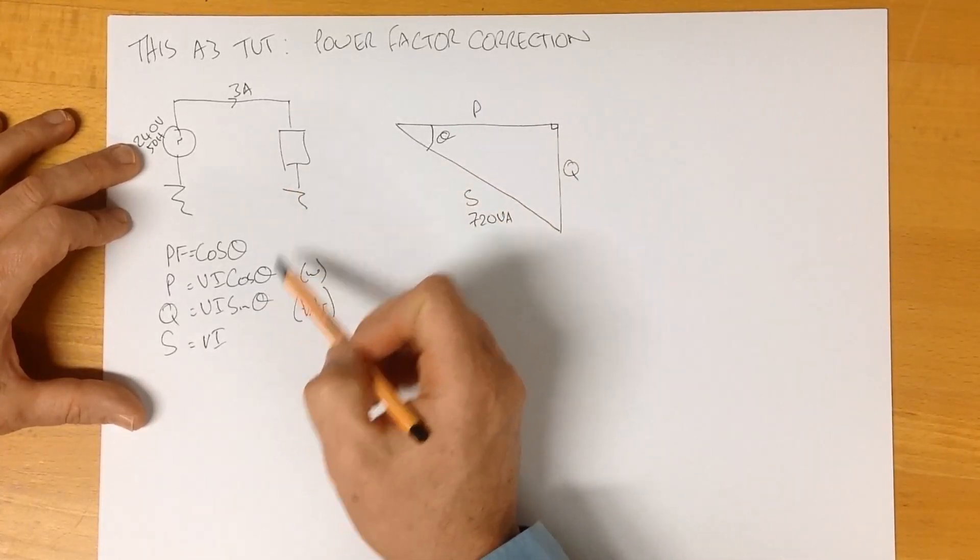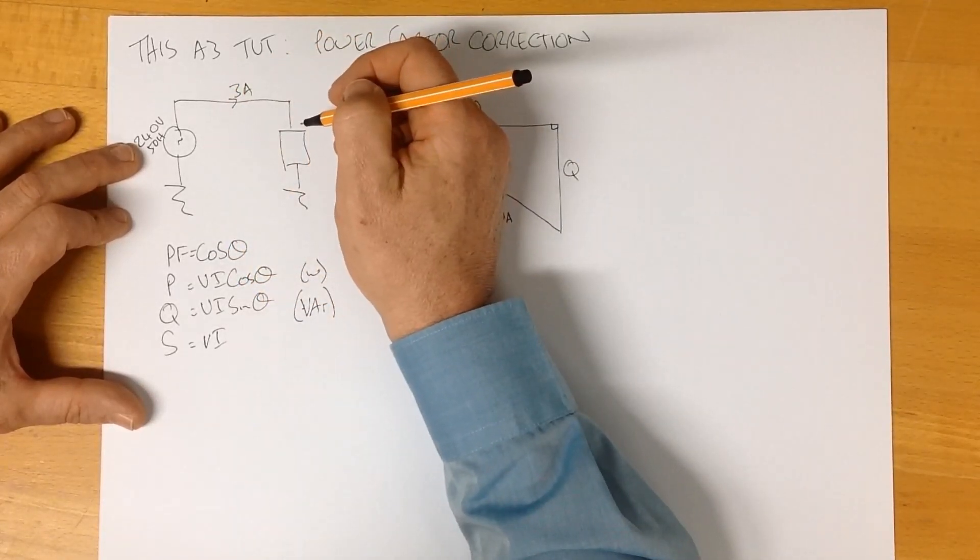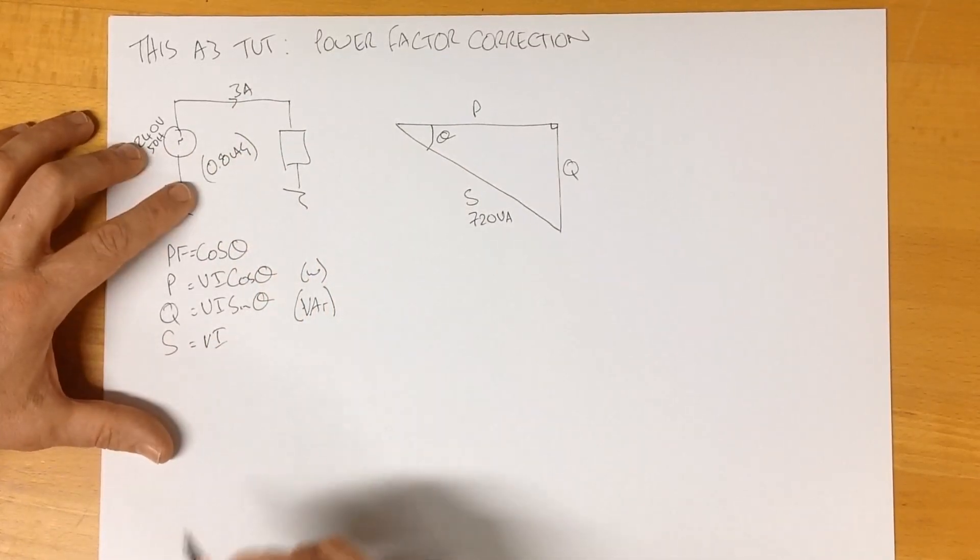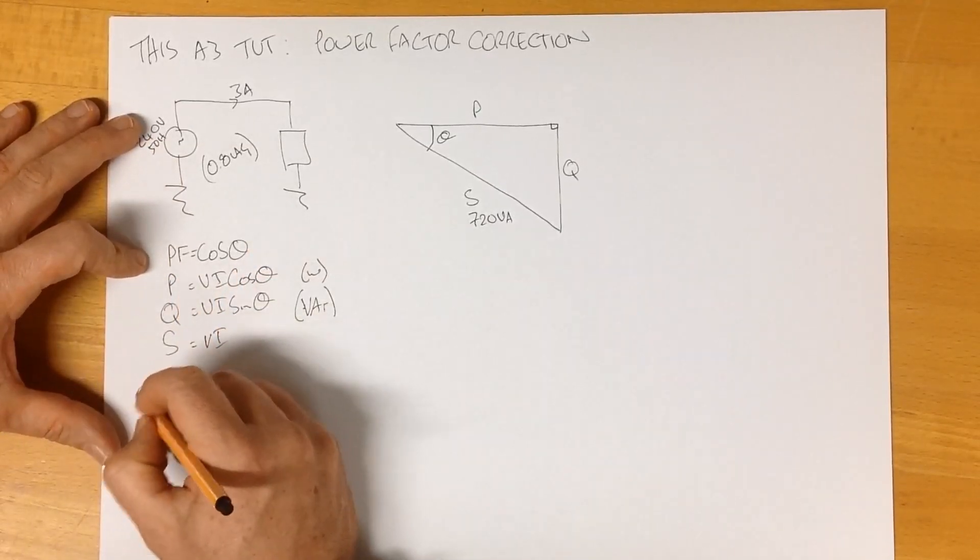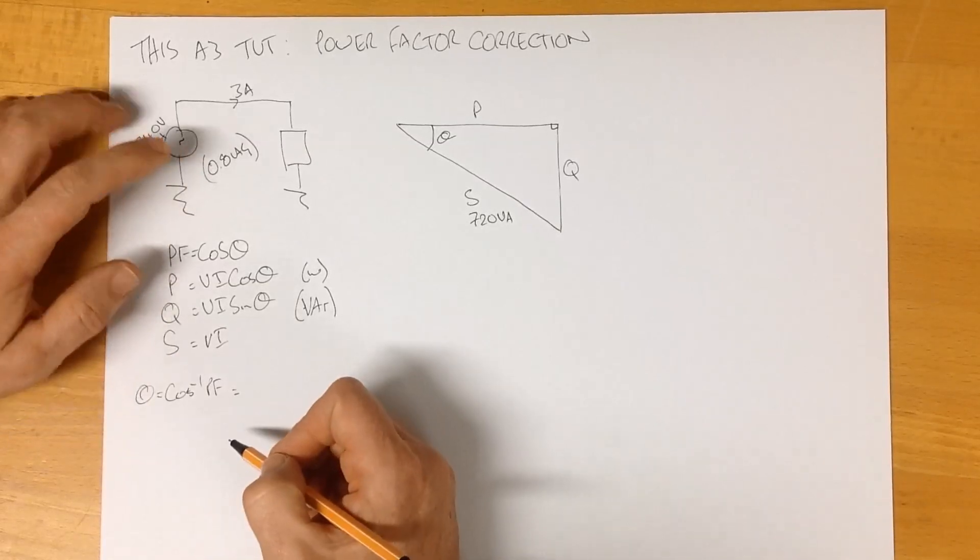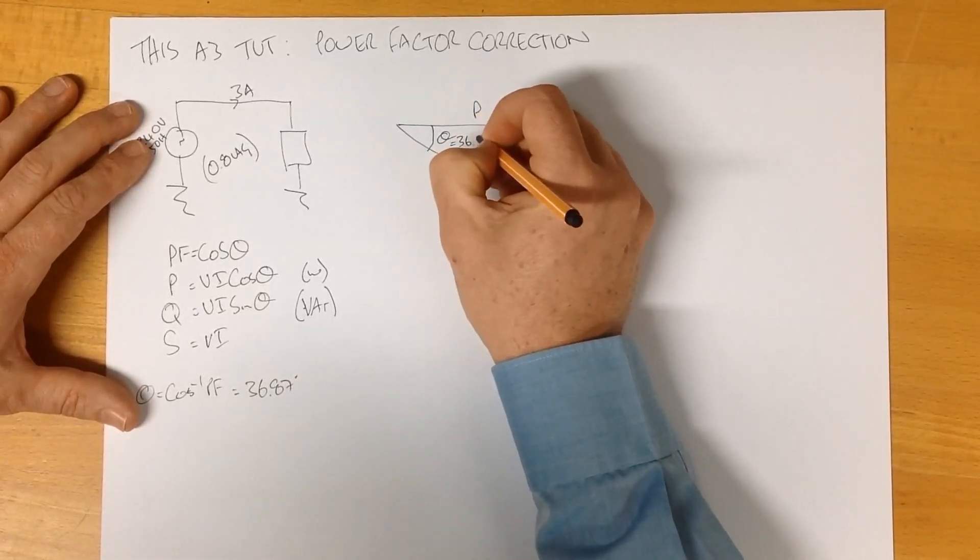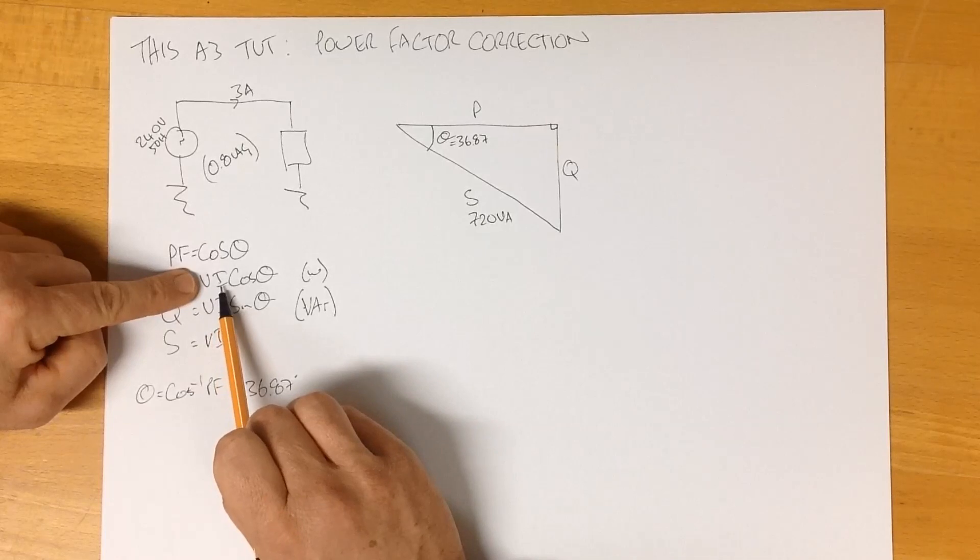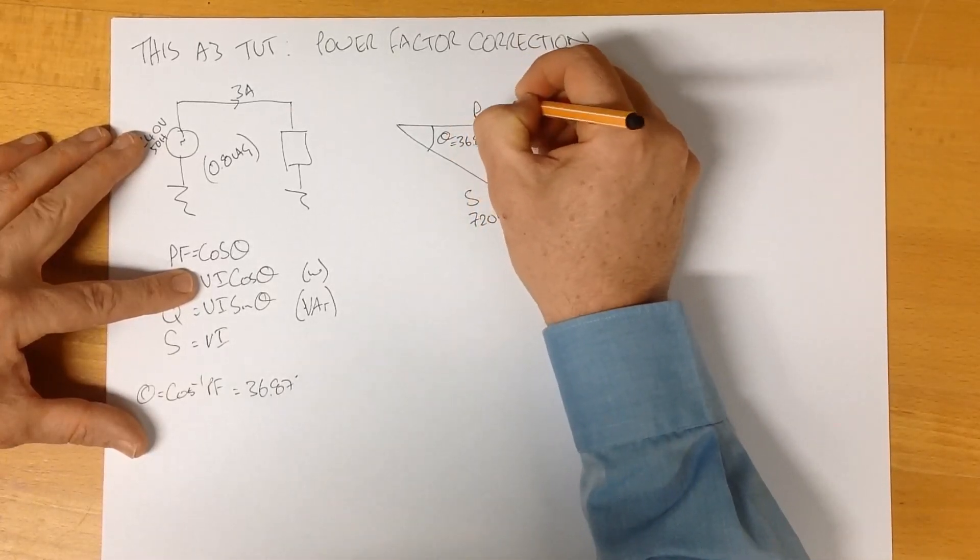We know that we need to know what the existing power factor for this system is, and we're going to call it 0.8. We'll assume that this system is a power factor of 0.8 lagging. So we know power factor, or we've assumed it for the purposes of this, so therefore we can work out our angle. So therefore our angle is inverse cosine of our power factor, which with a power factor of 0.8 gives us 36.87 degrees.